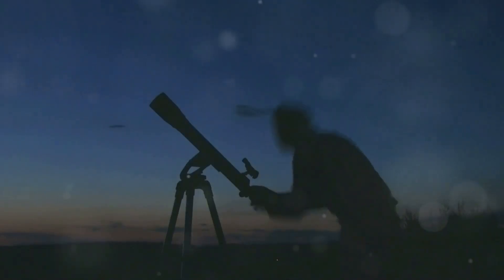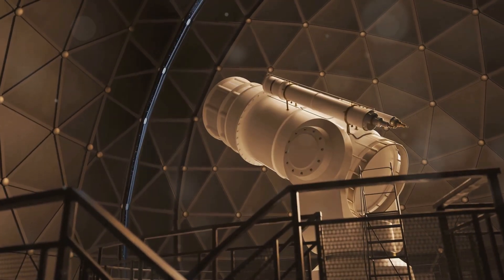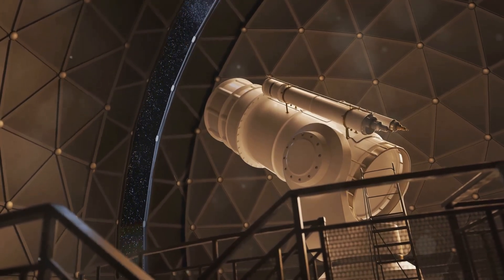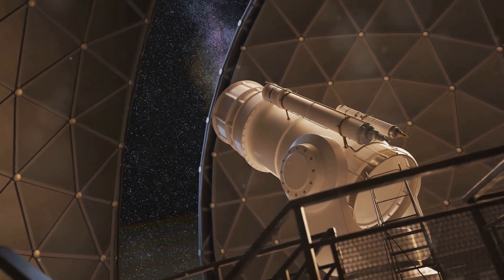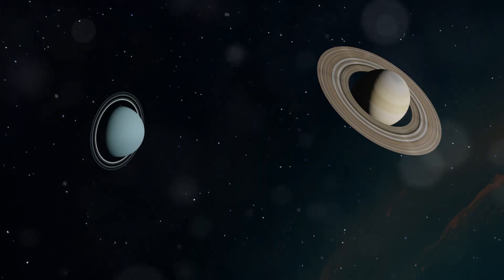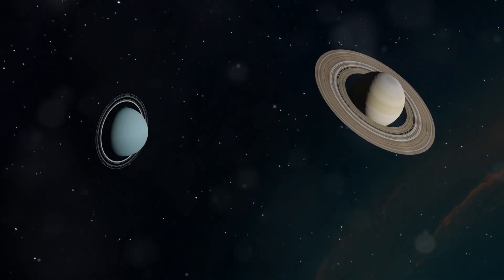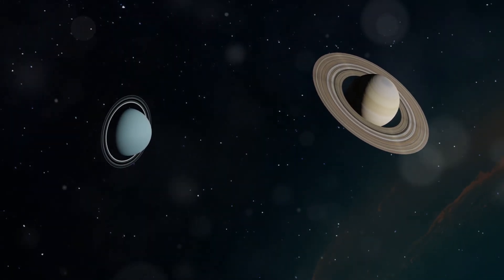In the case of this super-Earth, astronomers used a combination of both methods. By analyzing the observations, they were able to gather comprehensive data. This allowed them to confirm the planet's existence and determine its size and orbital period.